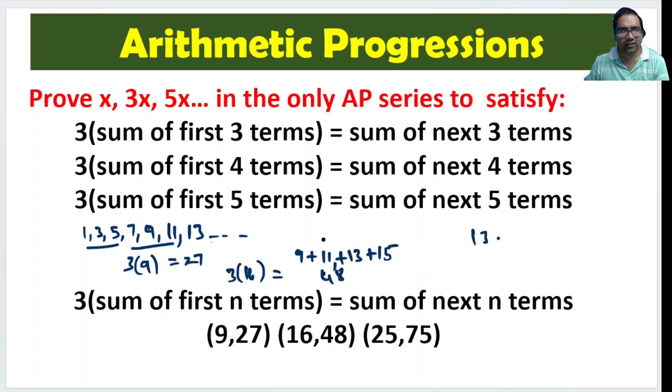Similarly 1, 3, 5, 7, 9. This is equal to 25. Now 11, 13, 15, 17, 19. The sum of these 5 is equal to 75. Everywhere we see whether we take 3 terms, 4 terms, 5 terms, n terms. Sum of first n terms is one third of sum of next n terms or 3 into sum of first n terms is equal to sum of next n terms. Now we have to prove that this is the only series that will satisfy this kind of equation.